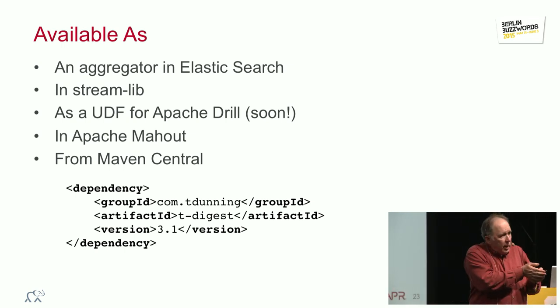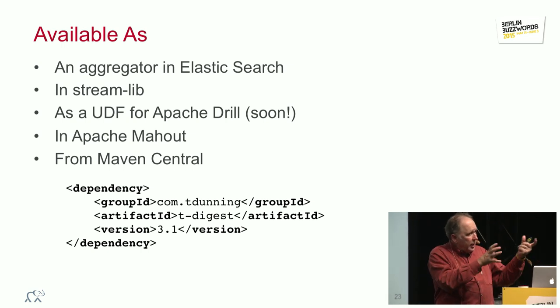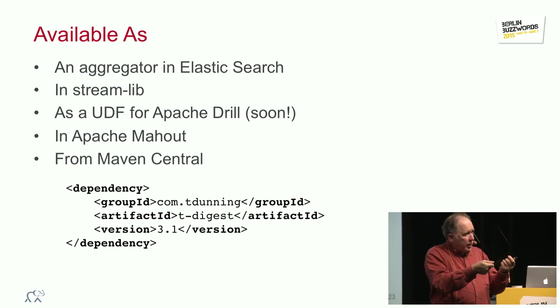So the API is also trivial. You ask it for a T-digest. It's a data structure. You feed it points, and you can ask for quantiles at any time.